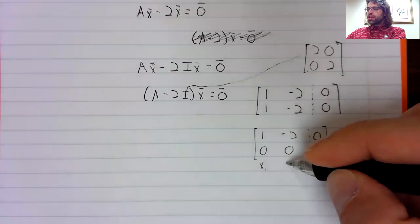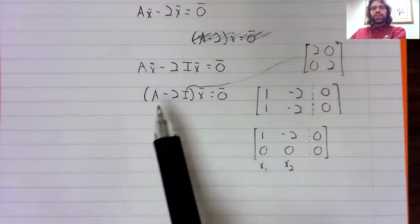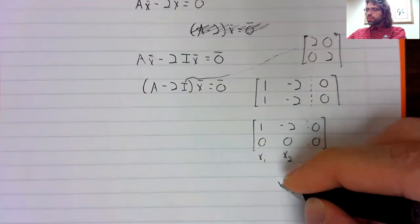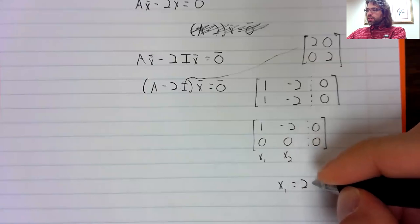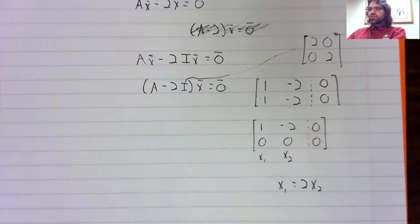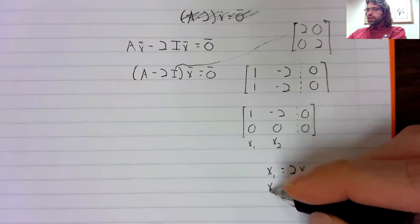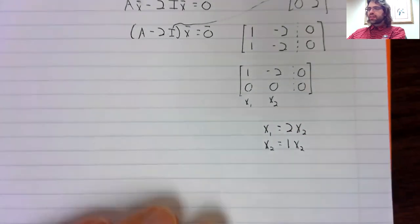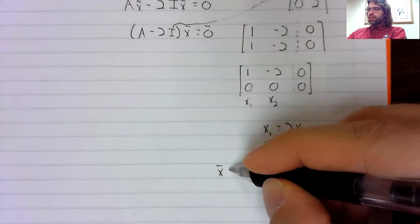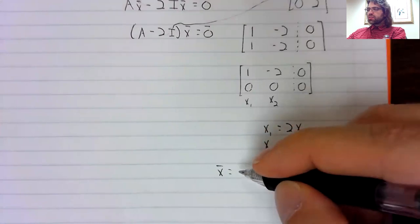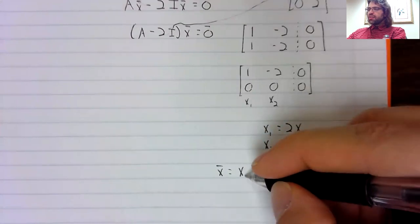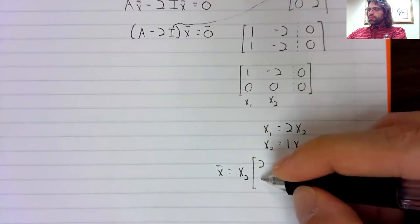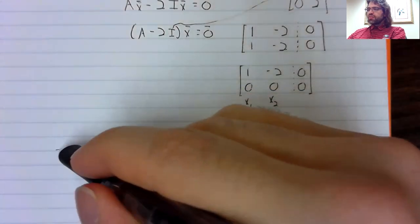We call this x1 and x2, the components of this vector x. Then x1 equals 2x2, and x2 equals 1x2. And x is a scalar multiple of this vector.